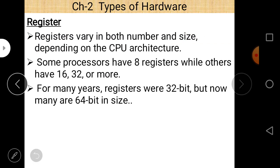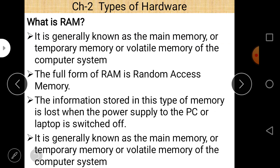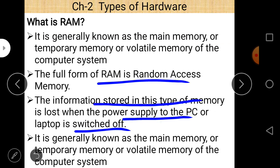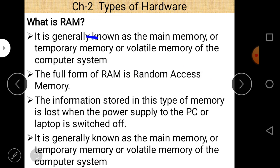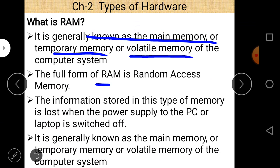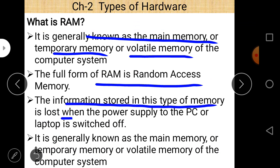RAM is generally known as main memory, temporary memory, or volatile memory of our computer system. The full form is Random Access Memory. Information stored in this type of memory is lost when the power supply to the PC or laptop is switched off. RAM is main memory — temporary memory or volatile memory.